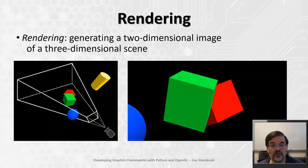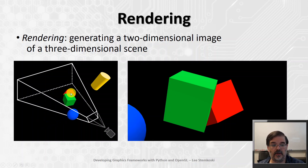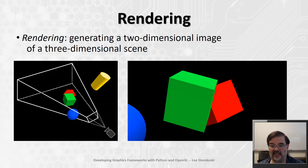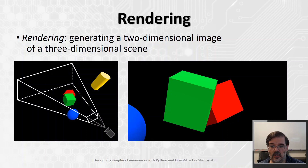Our primary goal is to generate two-dimensional images of three-dimensional scenes. This process is called rendering the scene. Scenes may contain two- and three-dimensional objects, from simple geometric shapes such as boxes or spheres, to complex models representing real-world or imaginary objects such as teapots or alien lifeforms. These objects may appear to be a single color, or their appearance may be affected by textures — images applied to the surfaces — or light sources that result in shading and shadows, or even environmental properties such as fog.